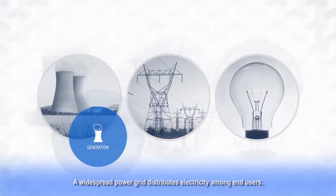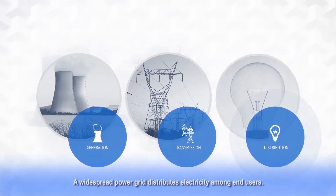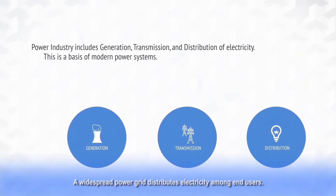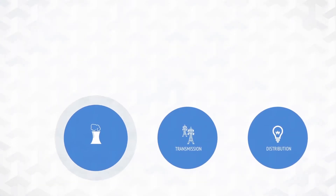Thus, power industry includes generation, transmission, and distribution of electrical energy. These functions are inherent in any modern grid system.